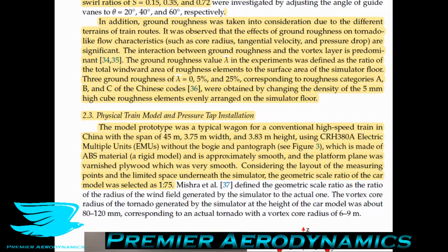Let's move on to the physical train model and pressure tapping installation. It's not just important to have the vortex simulated — you obviously want to measure the forces on the train. To do that, they put pressure tappings on the train, where you drill into the object, feed tubes through, cut them off at the surfaces, and glue them in. There are other ways to do this, but this is the traditional approach.